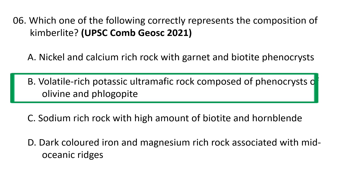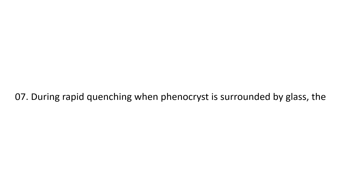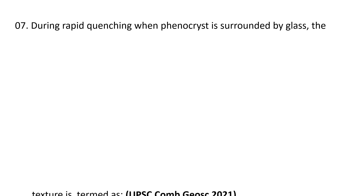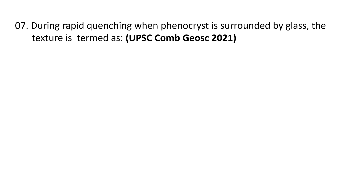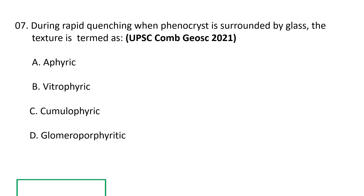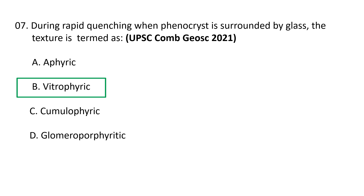Question 7: During rapid quenching, when phenocrysts are surrounded by glass, the texture is termed as: (a) aphyric, (b) vitrophyric, (c) cumulophyric, or (d) glomeroporphyritic. The correct option is B — vitrophyric. Vitrophyric texture is a variety of inequigranular porphyritic texture in which larger crystals known as phenocrysts are embedded in a glassy groundmass.